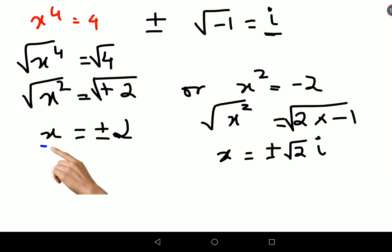these are the four values: plus minus root 2, and plus minus root of 2 i, for this particular question of indices.